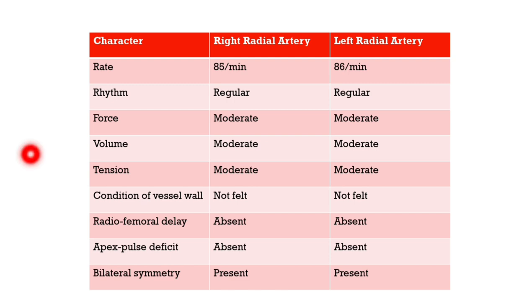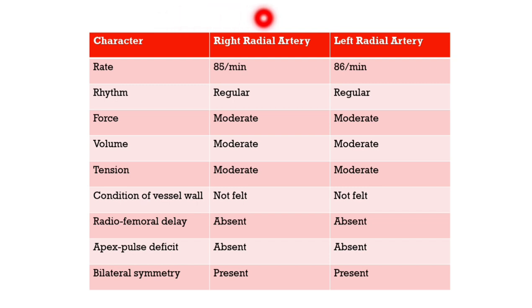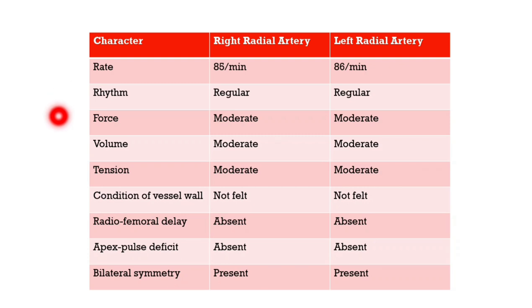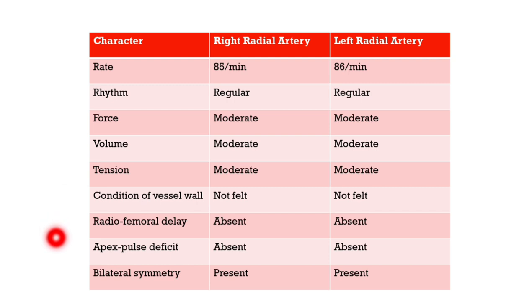You can see that in this tabular column, everything has been summarized and neatly presented. The first column lists the characters of the pulse. The second column shows the corresponding results for the right radial artery, and the third column for the left radial artery. The first parameter is rate: in the right radial artery it is 85 per minute, and in the left radial artery it is 86 per minute. The apex-pulse deficit is absent. Bilateral symmetry is present on both sides.